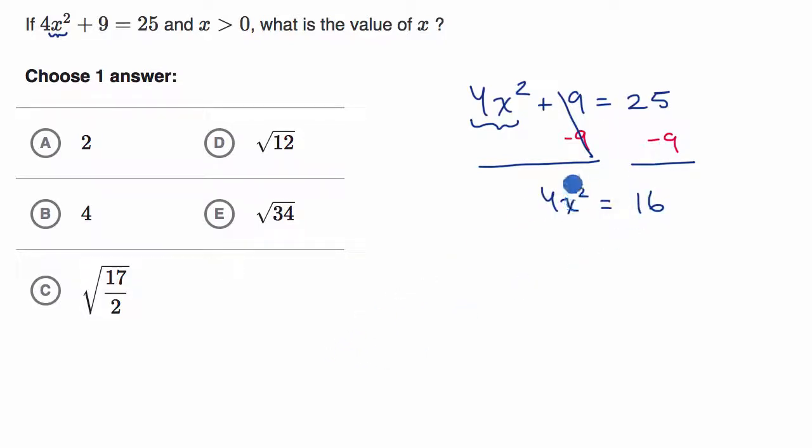Now if we want just an x² on this left-hand side, the best thing to do would be divide by four, but of course, if we want to maintain the equality, we'd have to do the same thing on the right-hand side.